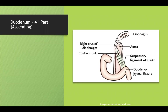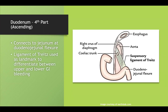The fourth part of the duodenum is the ascending portion, which connects to the jejunum at the duodenojejunal flexure. More importantly, the ligament of Treitz connects to this flexure and is a common landmark used to differentiate upper and lower GI bleeds. A bleed proximal to the ligament of Treitz is an upper GI bleed; distal to it is a lower GI bleed.